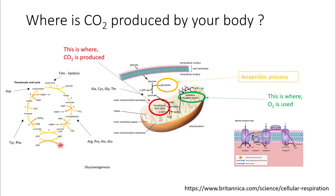The first step of glucose metabolism is glycolysis, which is an anaerobic process. The second part is the Krebs cycle or TCA cycle, and this is where your carbon dioxide is produced. The NADH produced during the Krebs cycle goes into oxidative phosphorylation, and that's where oxygen comes into play — oxygen is the final electron acceptor.